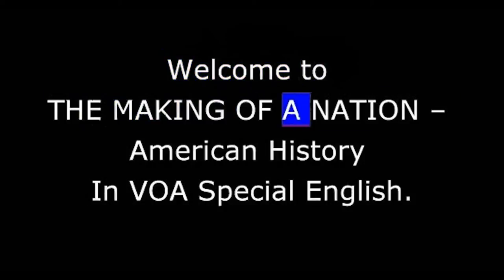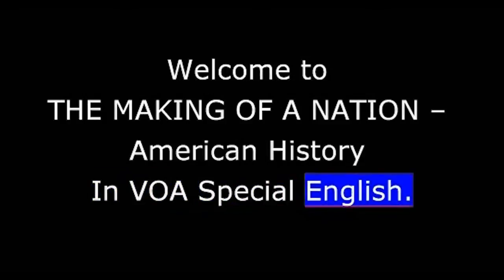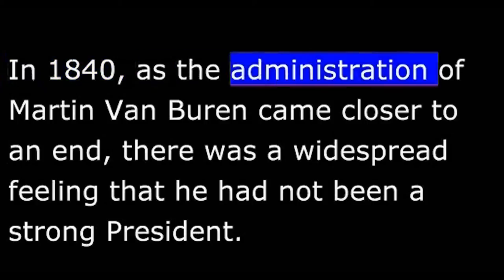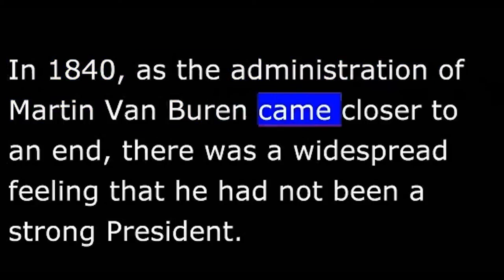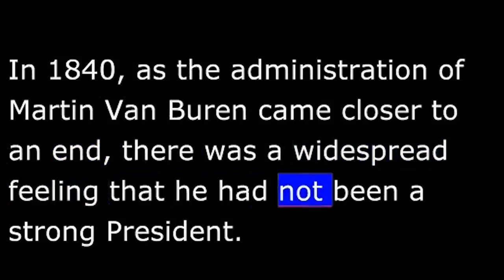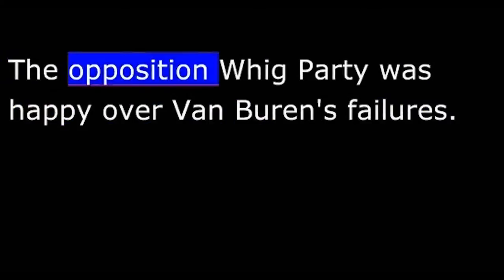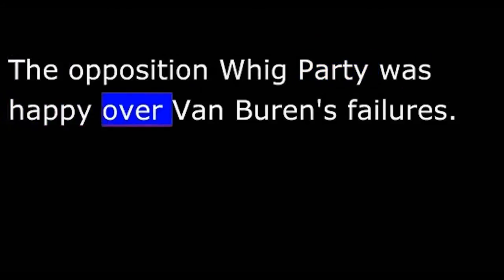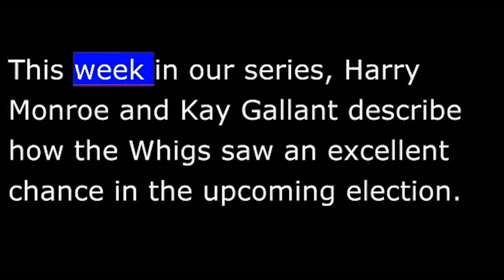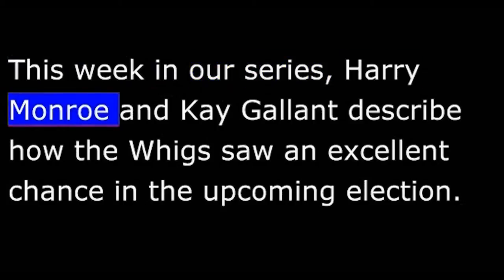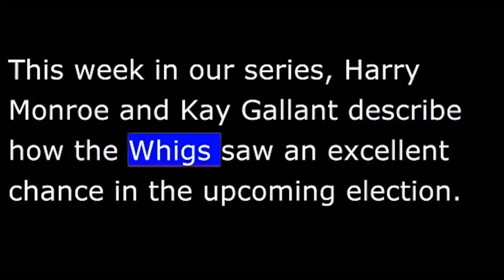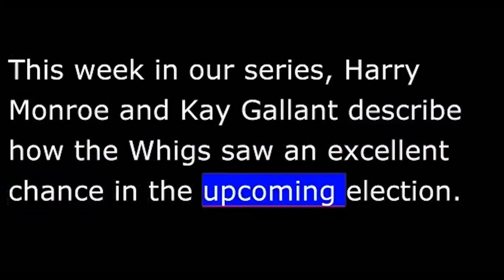Welcome to The Making of a Nation, American History in VOA Special English. In 1840, as the administration of Martin Van Buren came closer to an end, there was a widespread feeling that he had not been a strong president. He seemed unable to make the people understand his policies. The opposition Whig Party was happy over Van Buren's failures. This week in our series,